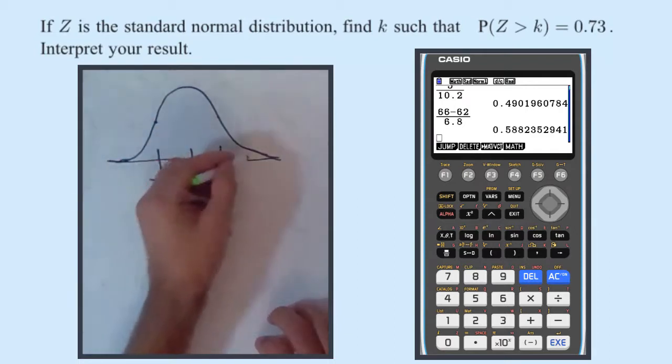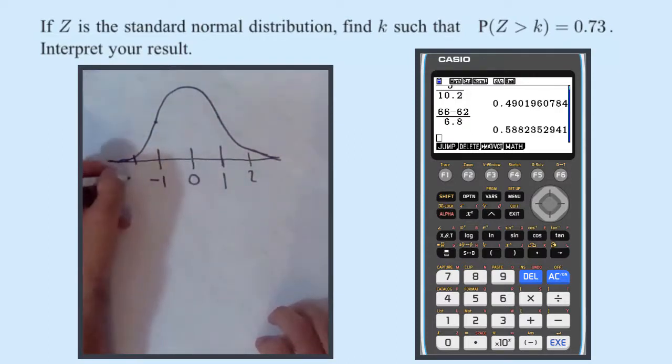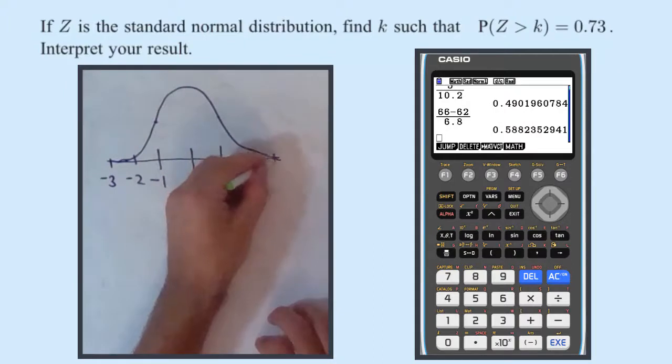Then if we go another standard deviation away, well this must be 2 and this here must be minus 2 and one more we go 3. Minus 3 and 3.